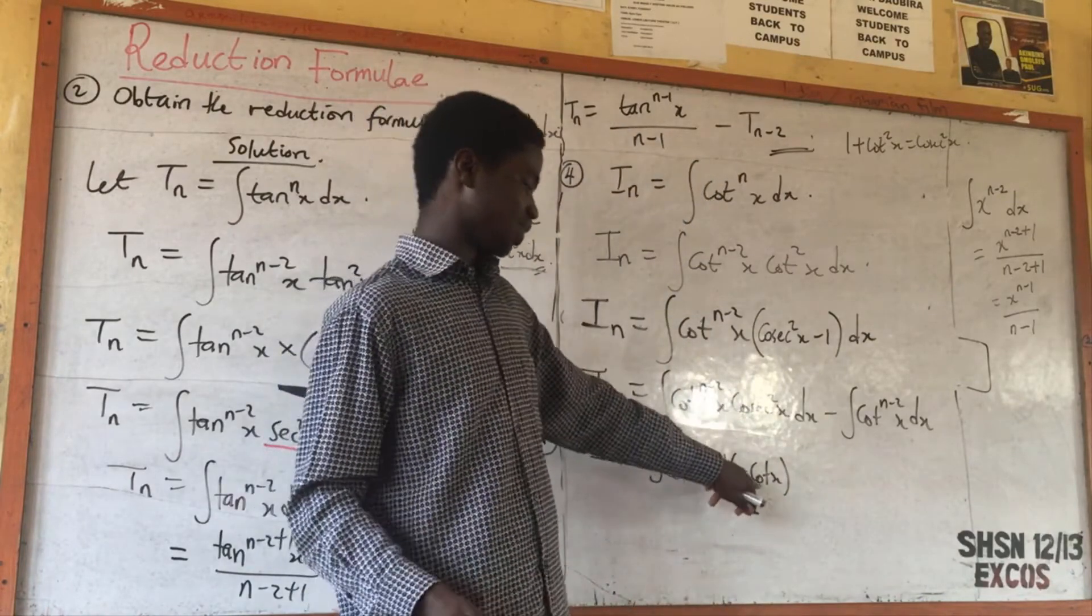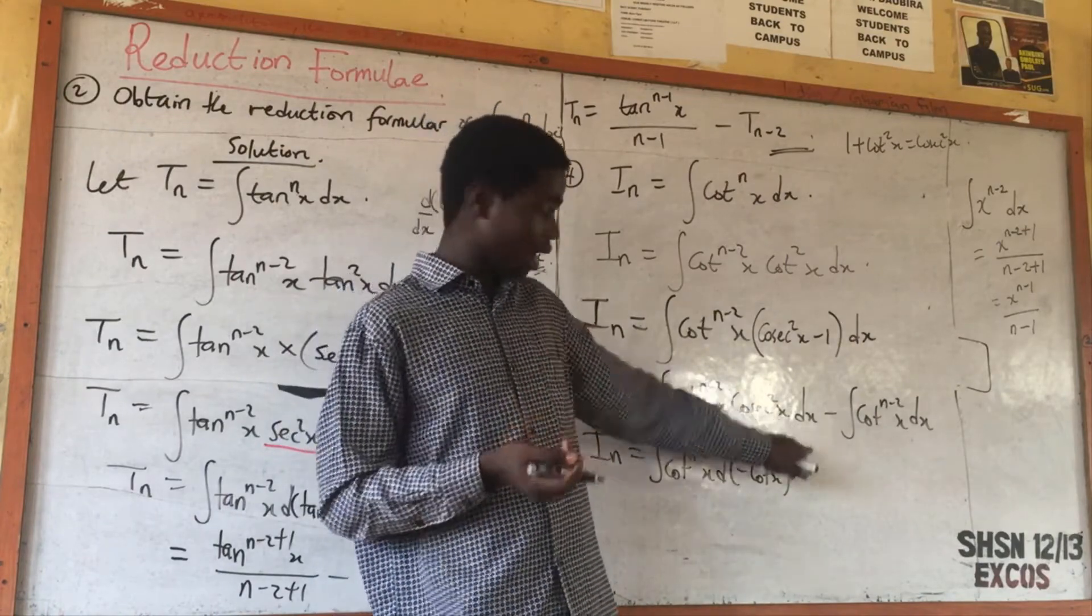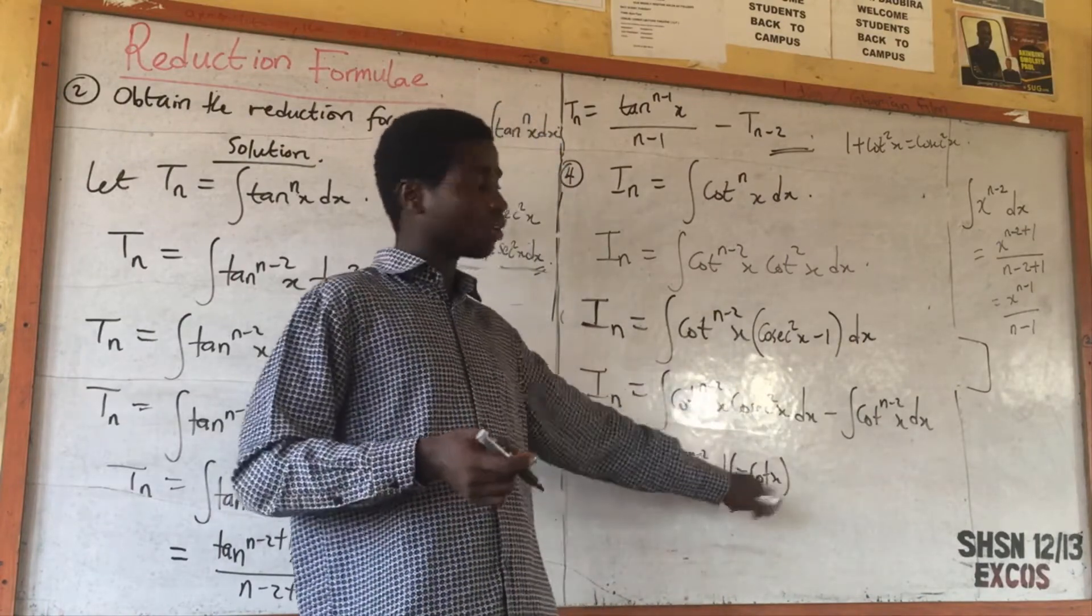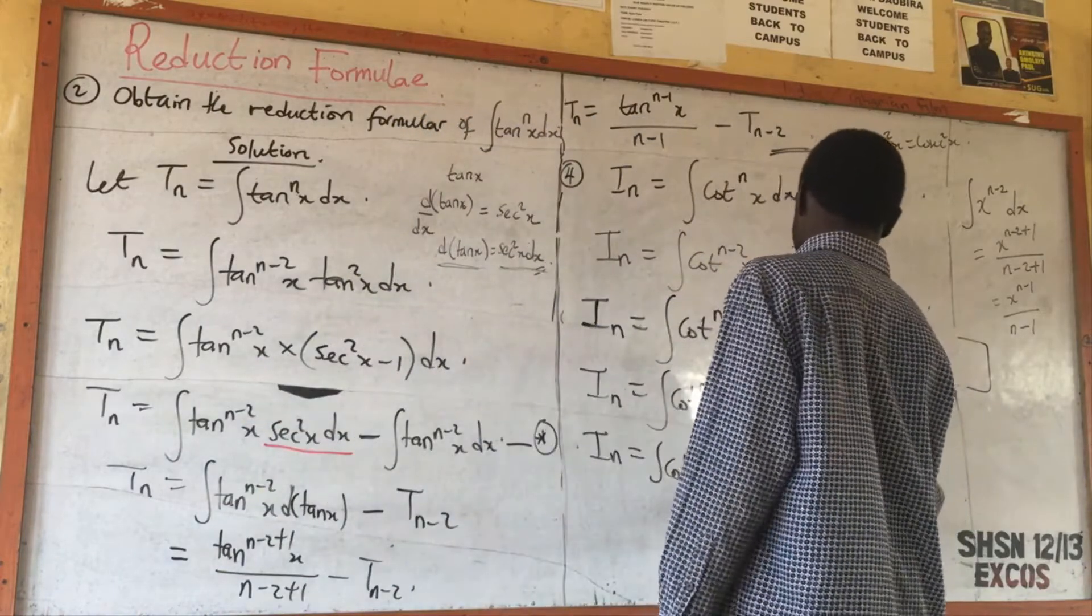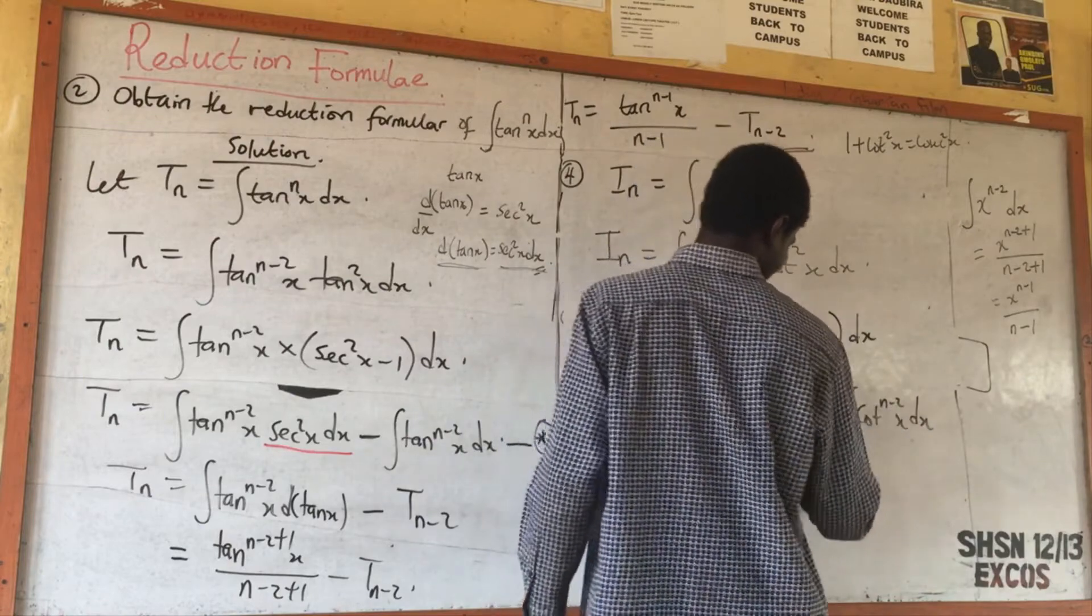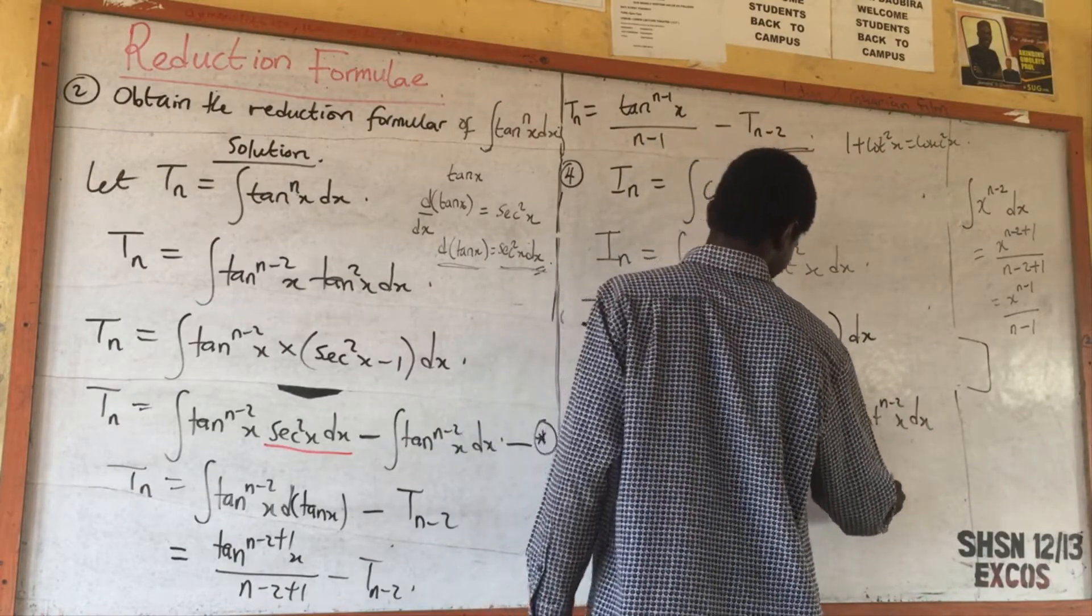Since if I differentiate cot x, I have minus csc²s, but I have just csc²s, I just put minus cot^(n-1)s, just like I have explained for this case. This is minus I_(n-2).